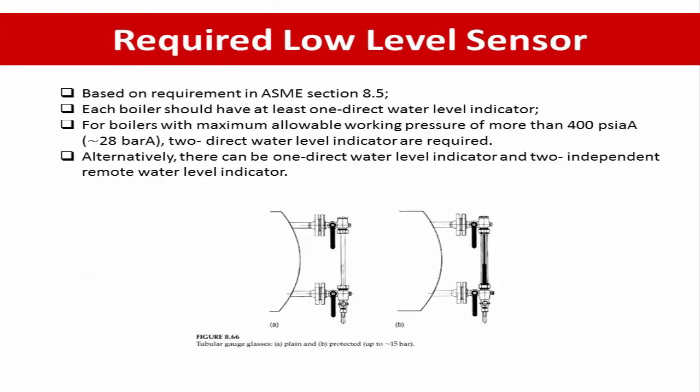Water level indication or gauge glass should be installed in a boiler drum, either for direct or remote viewing. As per ASME Section 8.5, the required number of water level indicators are: each boiler should have at least one direct water level indicator. For a boiler with a maximum allowable working pressure of more than 400 psi, approximately 20 bar, two direct water level indicators are required. Alternatively, one direct water level indicator and two independent remote water level indicators may be used.